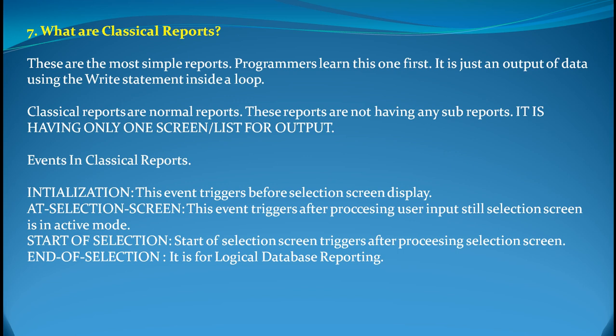The general events used in classical reports are: INITIALIZATION, AT SELECTION-SCREEN, START-OF-SELECTION, and END-OF-SELECTION. INITIALIZATION is used to trigger before the selection screen display. AT SELECTION-SCREEN triggers after processing the user input. START-OF-SELECTION gets triggered at the start of selection, after processing AT SELECTION-SCREEN. And finally END-OF-SELECTION is for logical database reporting, where the final output is to be displayed.